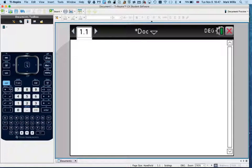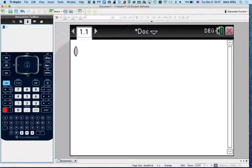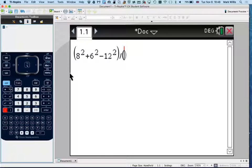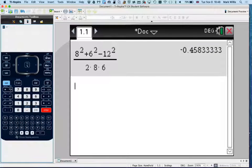And then putting in the numbers. So, you need to put in some brackets first. Brackets, because it's all at the top. So, it's 8 squared plus 6 squared minus 12 squared. Go outside the brackets, divided by brackets, 2 times 8 times 6. We'll close the brackets, and we'll press enter. And you'll see the calculator puts it in like it's supposed to be, and this gives me the minus answer.